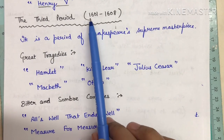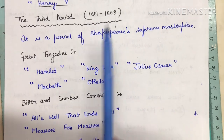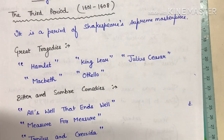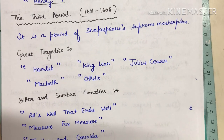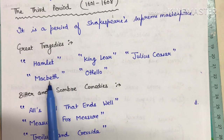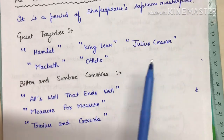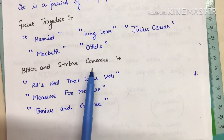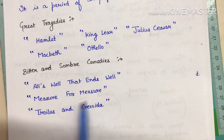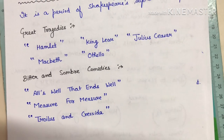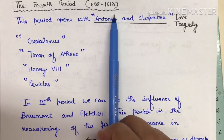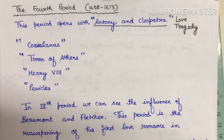The third period starts from 1601 to 1608 — the period of Shakespeare's supreme masterpieces, showing the full maturity of his dramatic talent. Great tragedies include Hamlet, Macbeth, King Lear, Othello, and Julius Caesar. Bitter and somber comedies also belong to this period: All's Well That Ends Well, Measure for Measure, and Troilus and Cressida.